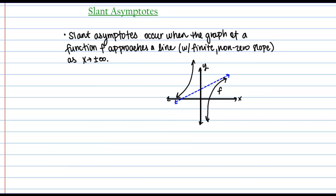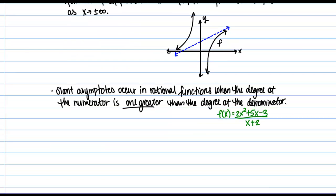Here I've given you a quick sketch of what that could look like. The slant asymptote is in blue, and we can see that on the ends of the graph — as x goes to positive and negative infinity — the function approaches this line. So when do slant asymptotes happen? Slant asymptotes occur in rational functions when the degree of the numerator is one greater than the degree of the denominator. In our particular function, the degree of the numerator is two and the degree of the denominator is one, so we're going to have a slant asymptote.